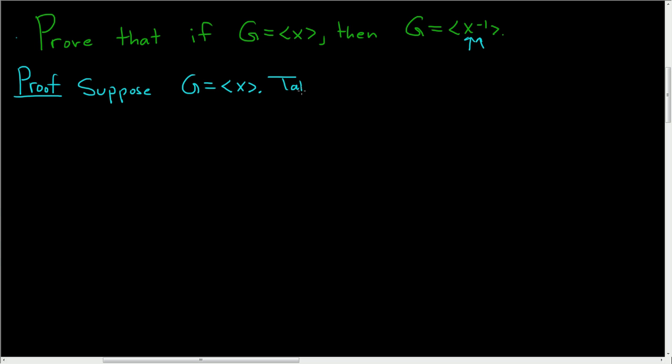So take any little g in capital G. Then since G is cyclic and it's generated by x, there exists an integer which we'll call n such that little g can be written as x to the n.